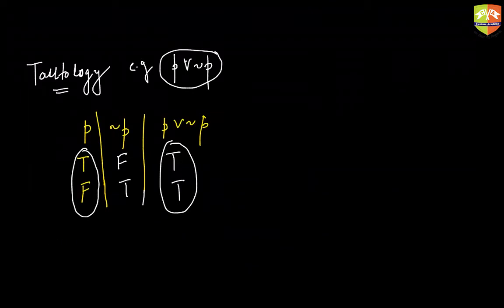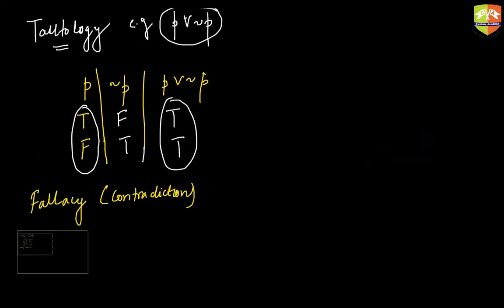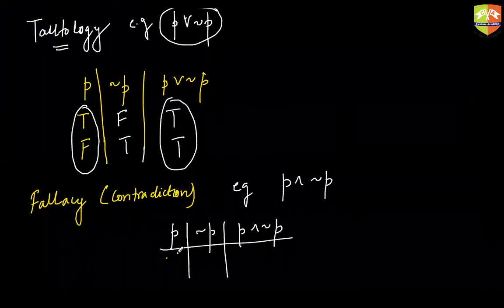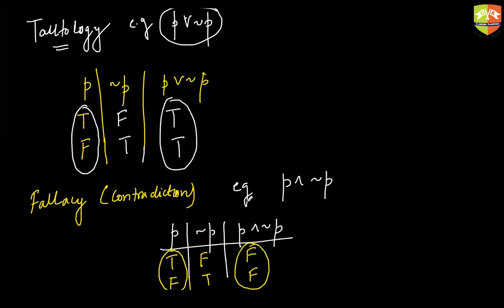On the other hand there's something called fallacy or we can say contradiction. An example of it can be p and not p. That means the statement will always be false irrespective of whatever is the truth value of the component statements. So if I take this as true and false, then this will be false and true, and their conjunction will always be false.